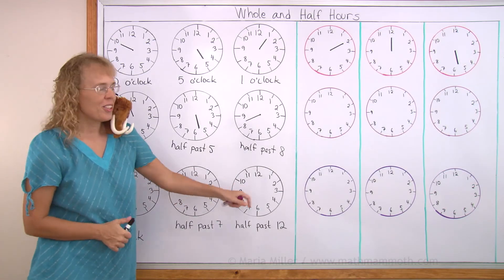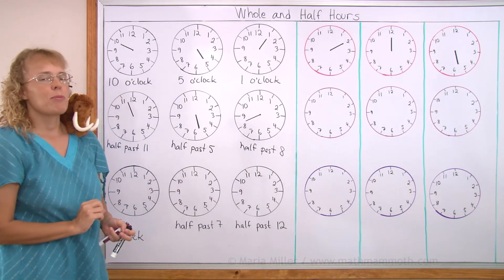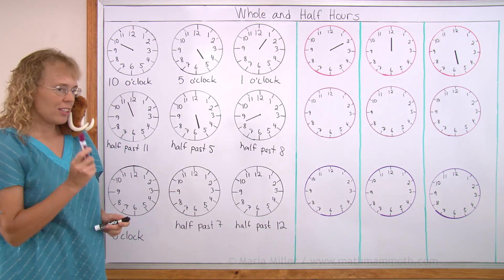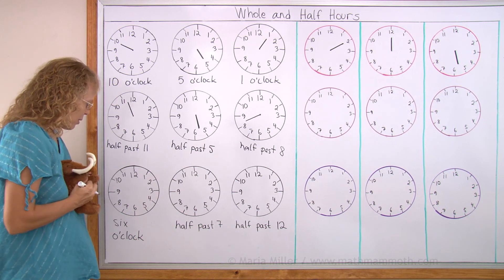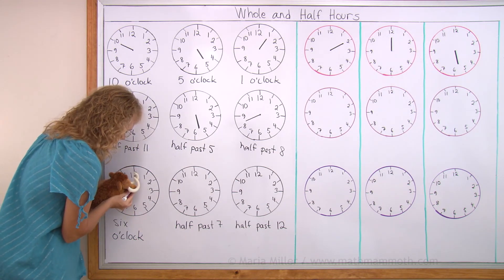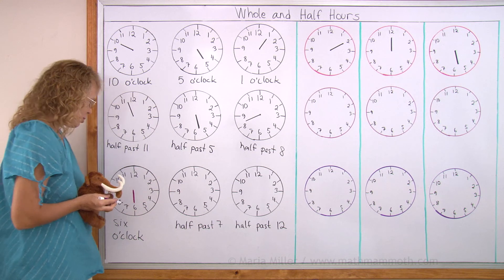Now here, we need to draw the hour hand. This time I am going to let Mathie actually draw it with this nice purple. 6 o'clock. Where is the hour hand going to point? Well, obviously, yeah, that's easy. Just to 6.